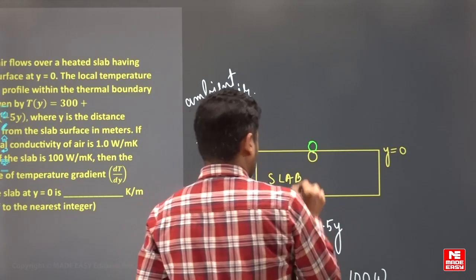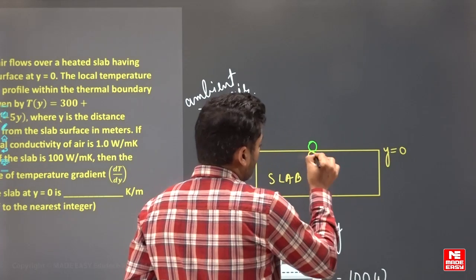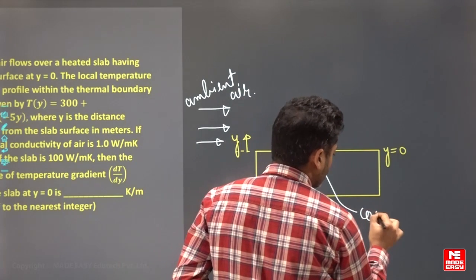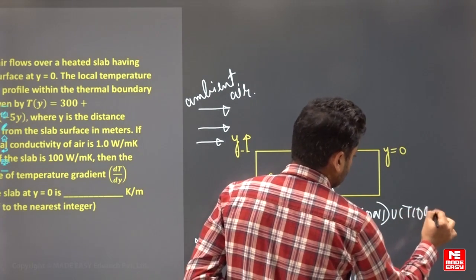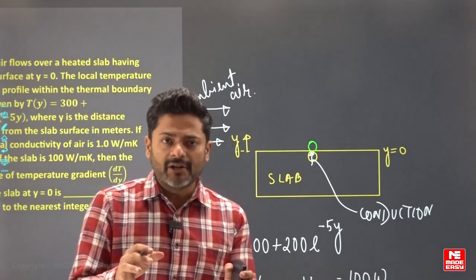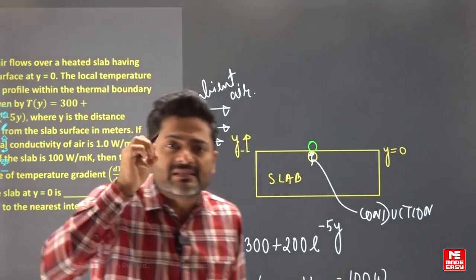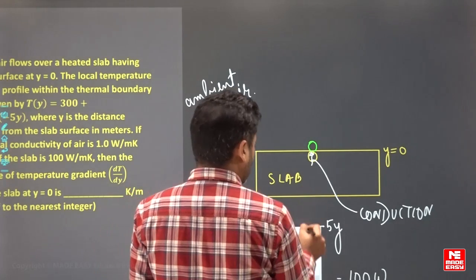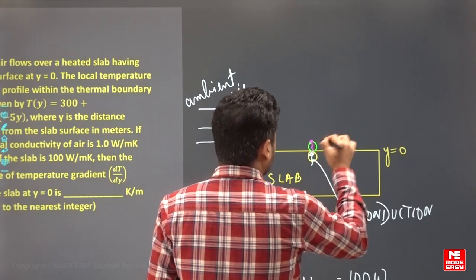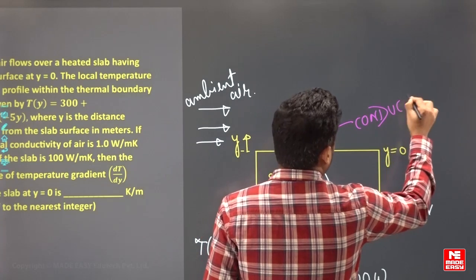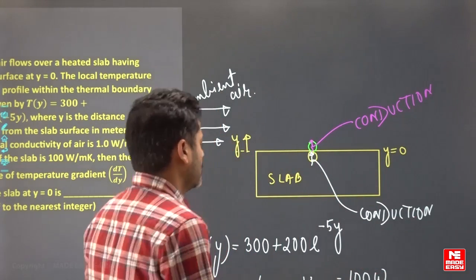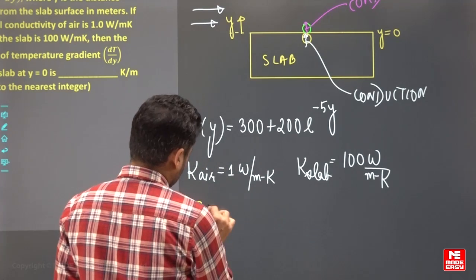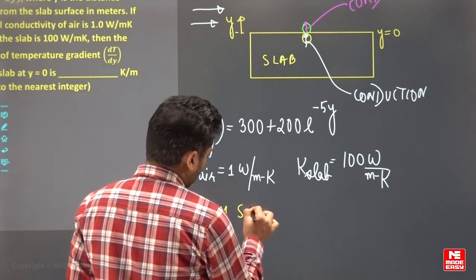Please pay attention here. Heat transfer from the solid body is by conduction. The green color molecule of ambient air is stuck on the surface due to the no-slip condition. The heat it receives is also by conduction only. So both sides involve conduction. By applying the surface energy balance at the interface, we can solve this.